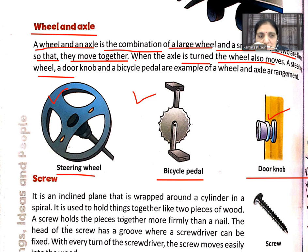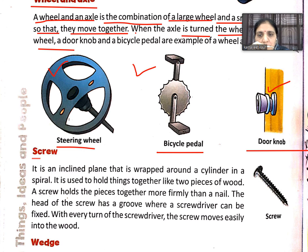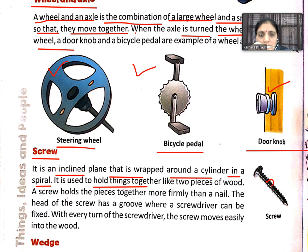Now, screw. A screw is an inclined plane that is wrapped around a cylinder in a spiral. It is used to hold things together — like joining two pieces of wood. A screw holds the pieces together more firmly than a nail.